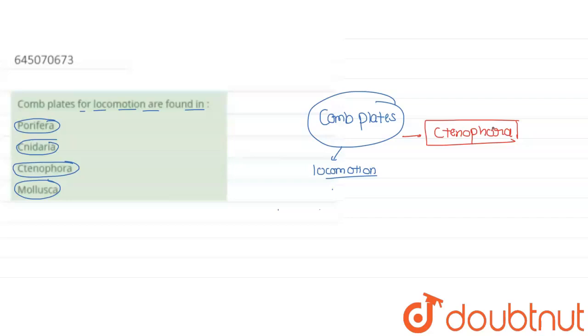Now, if we look at our options, first option is Porifera. In the case of Porifera, although they have movement, they are free swimming in nature. So that's why it is not our answer.